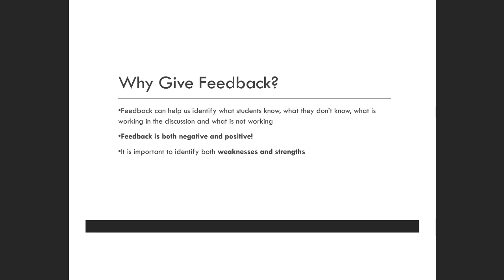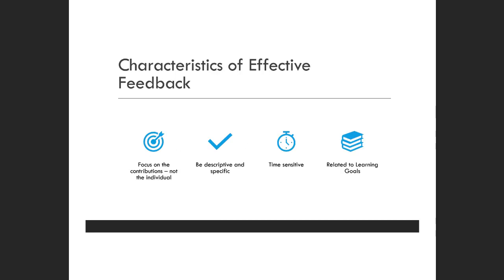It's important to identify both weaknesses and strengths. Weaknesses are there to point out so we can improve on them; and then strengths — we want them to know what their strengths are so they can continue doing those things. Characteristics of effective feedback: focus on the contributions, not the individual. This is especially important when pointing out weaknesses. You could focus on what the student has done rather than the student themselves. For example, instead of saying 'your organization skills are not that strong,' say something like, 'you have some great points here, but what can make your argument more powerful is if we structure it this way.'